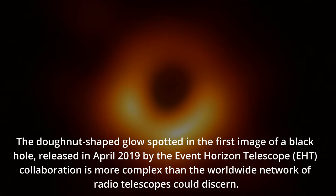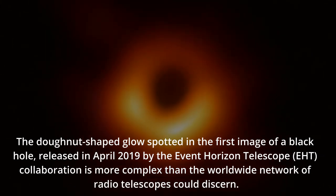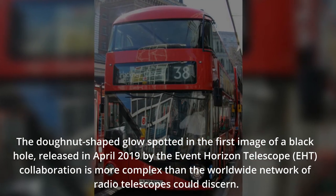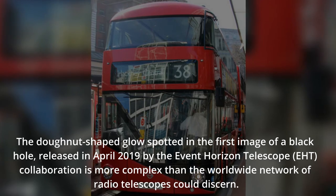The donut-shaped glow spotted in the first image of a black hole, released in April 2019 by the Event Horizon Telescope collaboration, is more complex than the worldwide network of radio telescopes could discern.